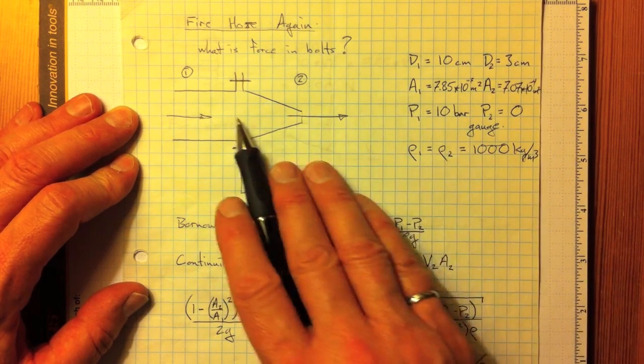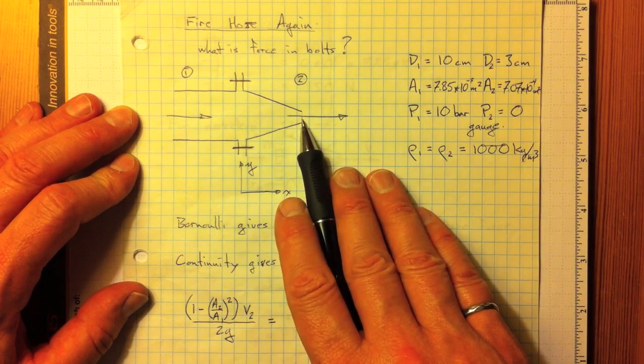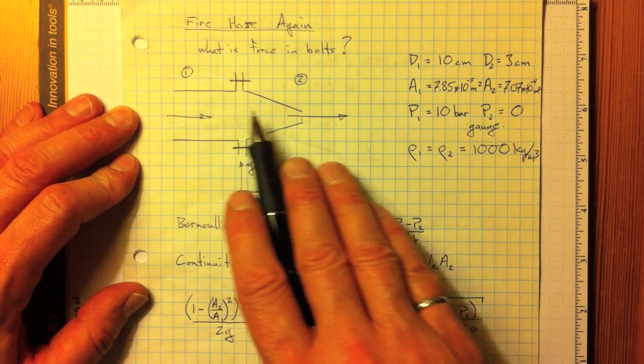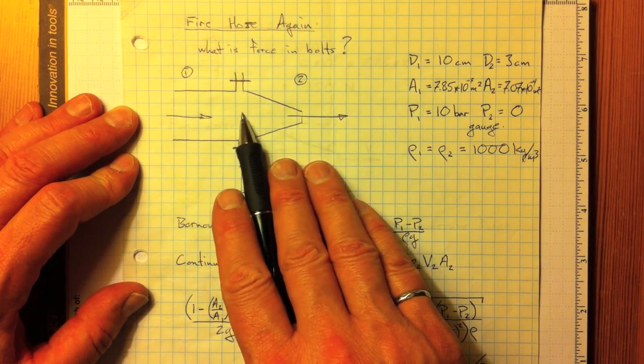So the fluid is accelerating considerably. We can calculate the areas of the two locations. The area here is about 1 tenth of the area here, meaning that the velocity here will be about 10 times what the velocity was here.